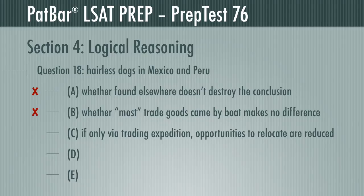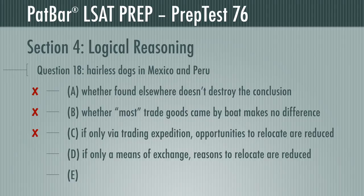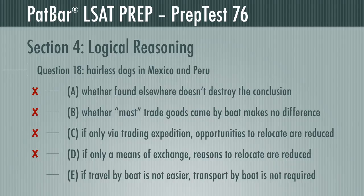C seems to suggest that the dogs could only have arrived as part of a trading expedition, which would seem to make their relocation even more difficult — we need a requirement, not a hindrance. Not only is D completely irrelevant, but it would also reduce the likelihood of relocation if the dogs' purpose was as a means of exchange. The one requirement that collapses the argument if not true: if travel by boat was not easier centuries ago, the argument that they must have come by boat makes no sense. E is the correct response.